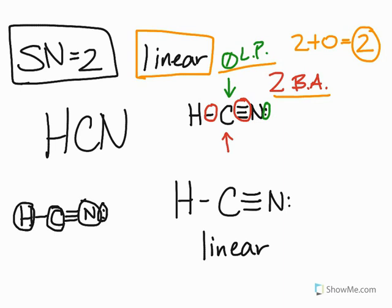So there's my structure, hydrogen cyanide. It is a linear structure, two bonding areas, zero lone pairs. All right, let's take a look at some additional steric numbers and the possible shapes that they may have. I'll talk to you soon.